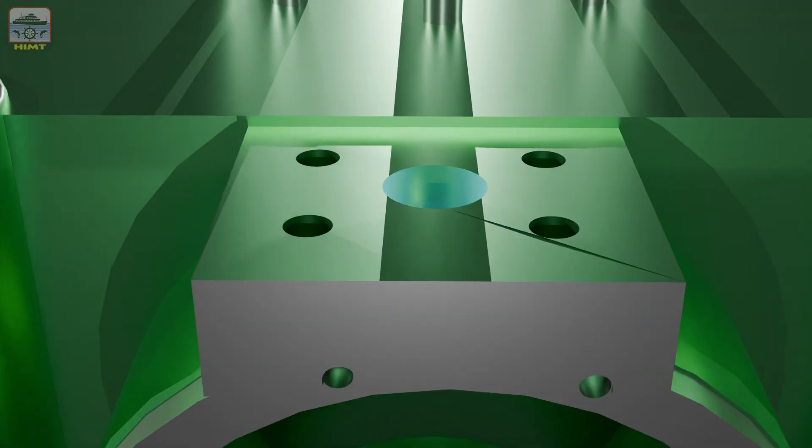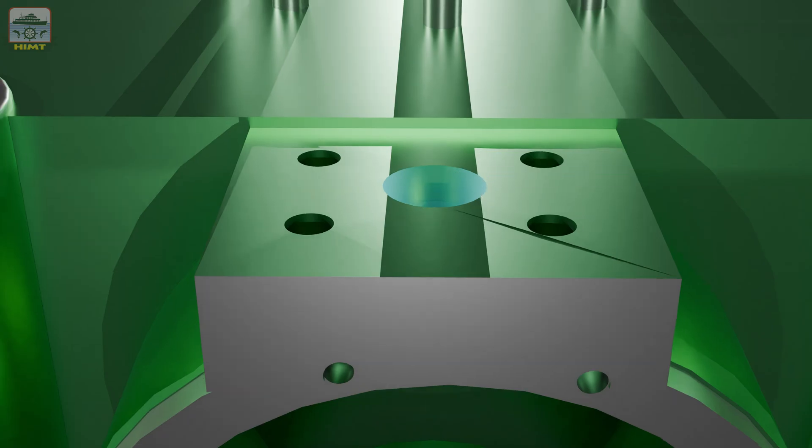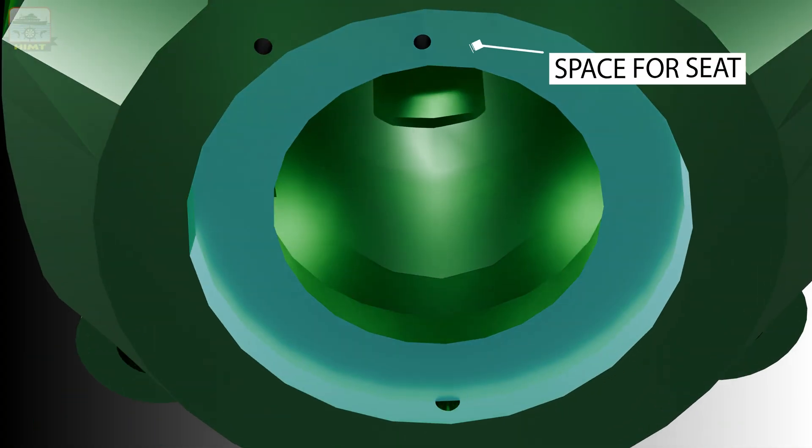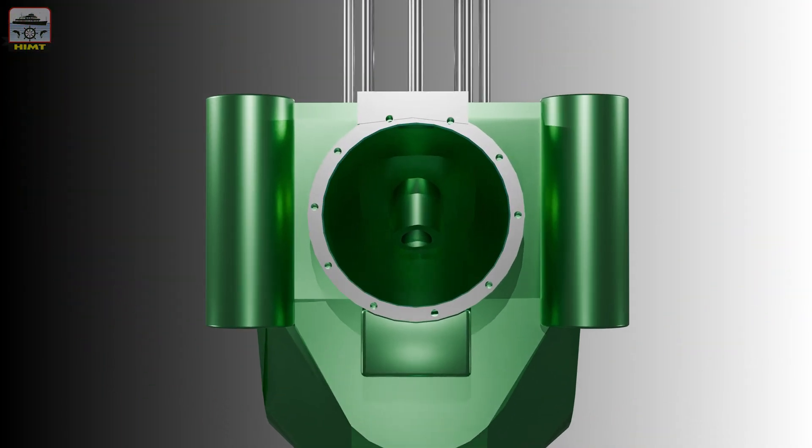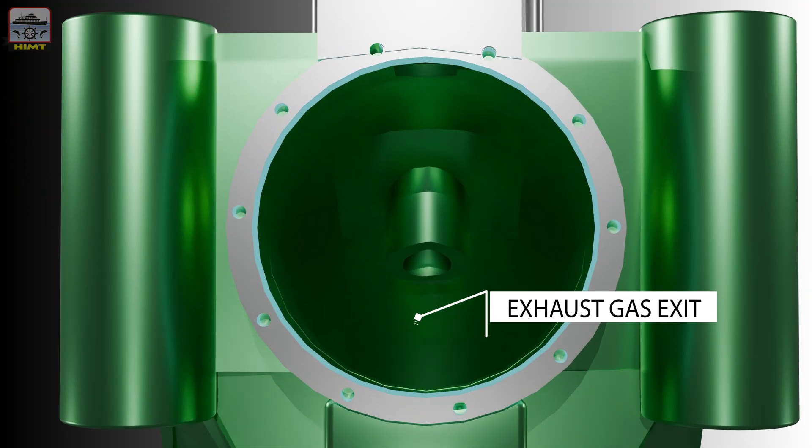The cooling water leaves the exhaust valve on top at this location. The housing has an opening at the bottom to accommodate the seat. The exhaust valve has an opening at the side for the exhaust gas to leave.